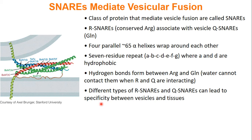You can have specific types of R-SNAREs and Q-SNAREs, which helps vesicles and whatever membranes they're trying to go to have a more specific relationship. You don't want your vesicles going to any type of cell, and you don't want your cells taking up any type of vesicle. So having specific Q and R SNAREs can help mediate this interaction.